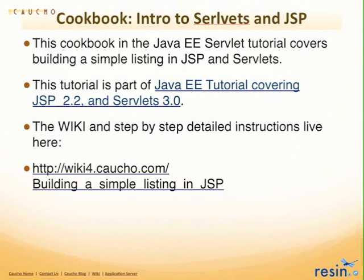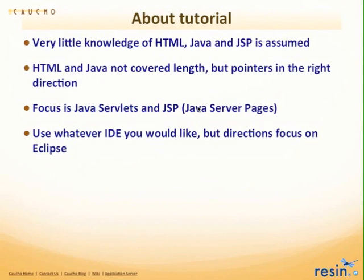This first tutorial is about getting started with JSP and MVC architecture. Here's the wiki location at wiki.forcacao.com: 'Building a Simple Listing in JSP.' This is part of a bigger Java EE tutorial covering JSP 2.2 and Servlet 3.0. There's a video on that as well. So there's the wiki, the source code, the slides, and the videos.